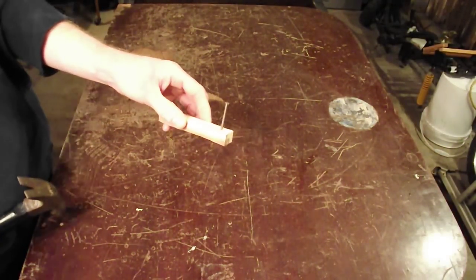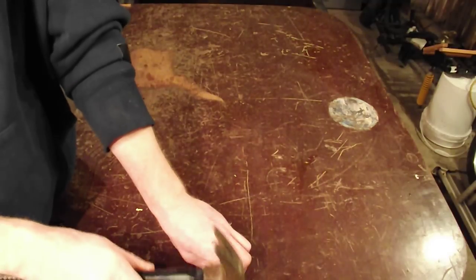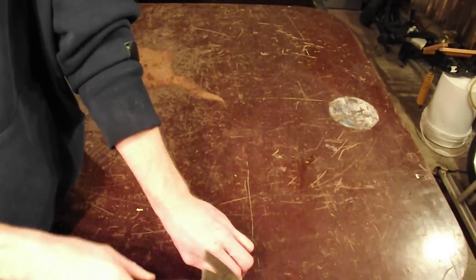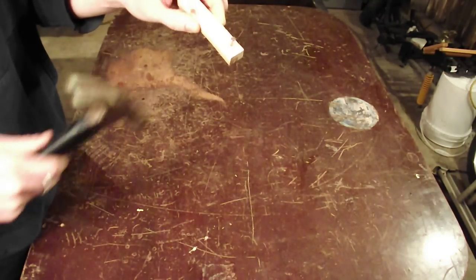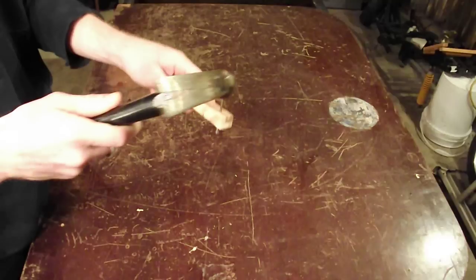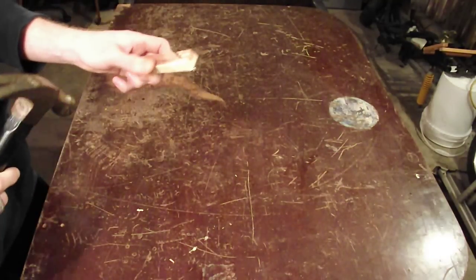Pound the nail into the wood right about there. Leave about half an inch of the head sticking out. You want to pound this end of the nail down. I'll scoot this on the floor.